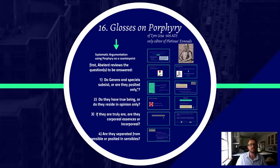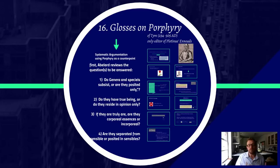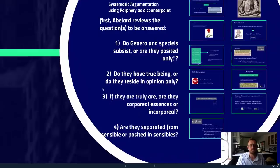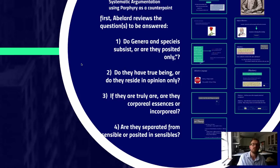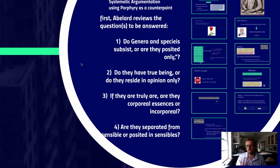Abelard first reviews some questions raised by Porphyry himself, then raises his own questions, goes over roughly two theories about how to answer the problem of universals, ultimately rejects both, and then offers his own. The first question is: do genera and species subsist or are they merely posited? Second: do they have true being, or do they reside only in the opinion of thinkers? Third: if they exist, are they corporeal or incorporeal essences? Corporeality means having extension in space.